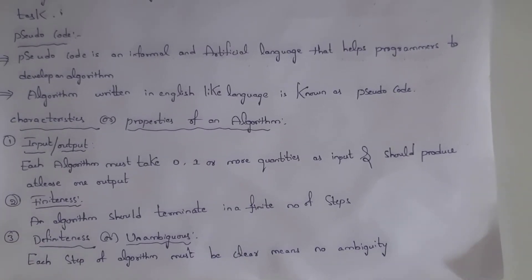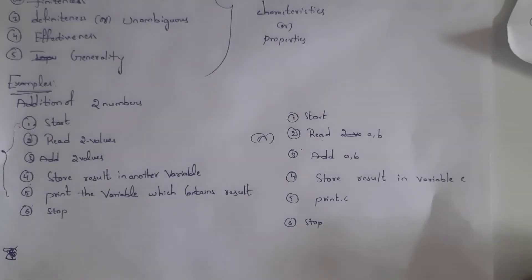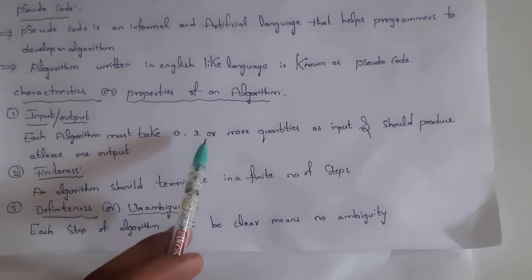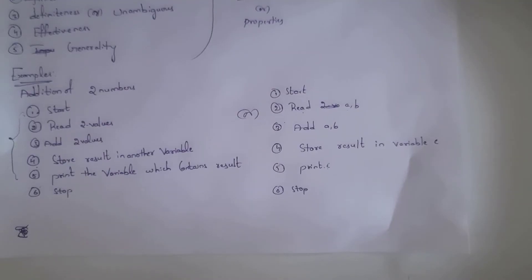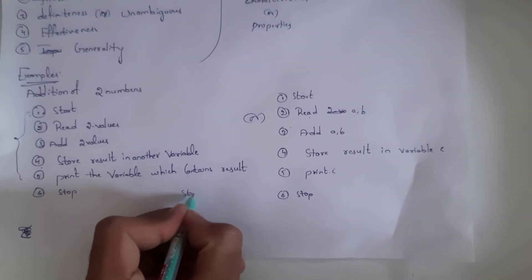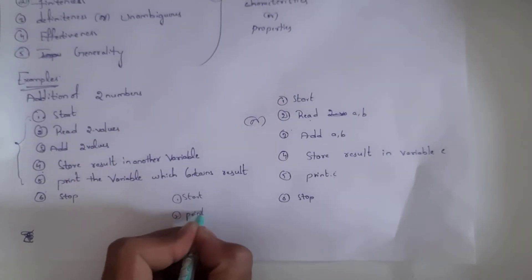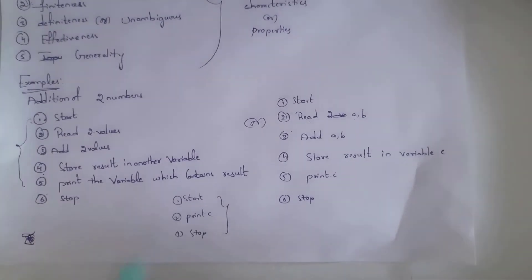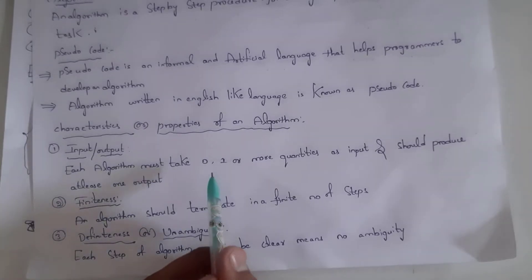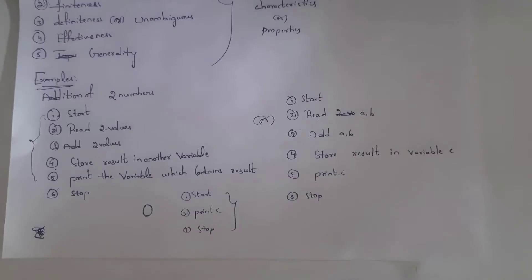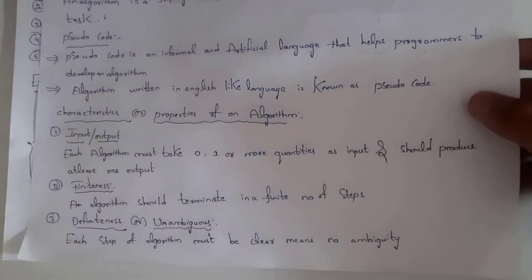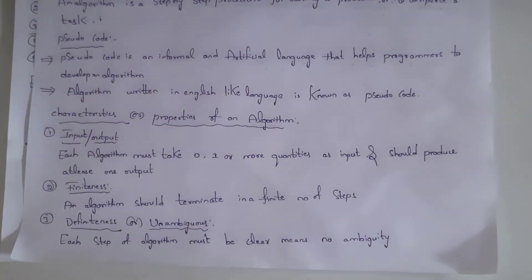The first characteristic is Input and Output. Each algorithm must take zero, one, or more quantities as input and should produce at least one output. For example, input can be zero — meaning no input is required. But there must be at least one output. An algorithm should always produce at least one output.